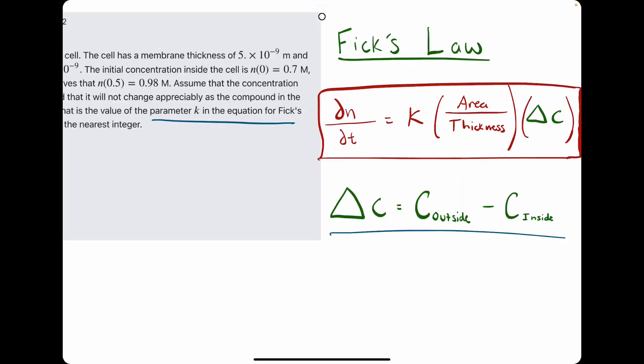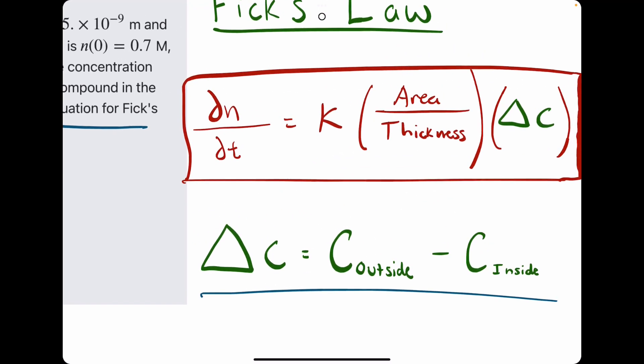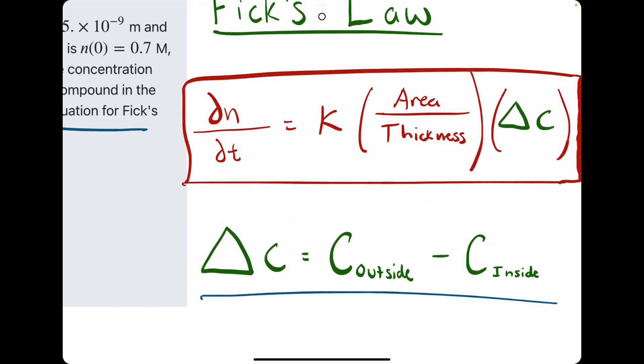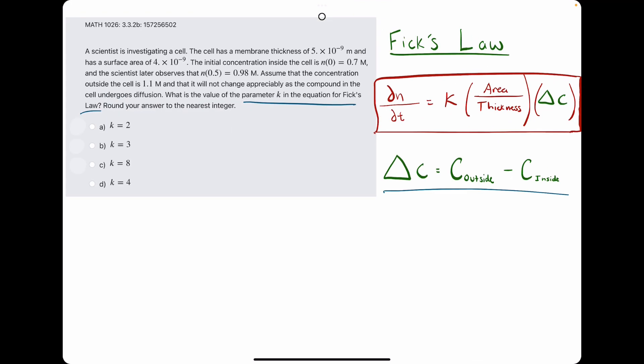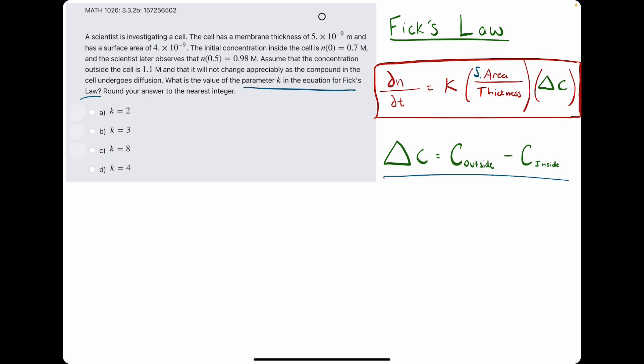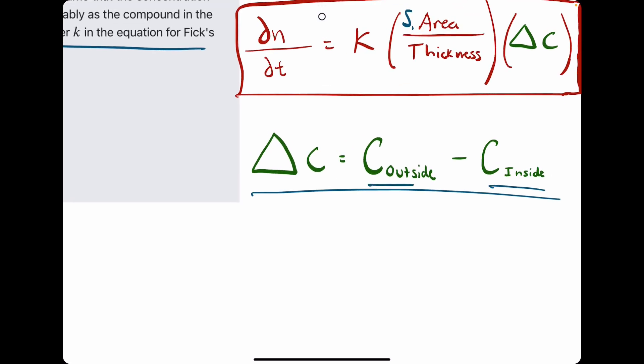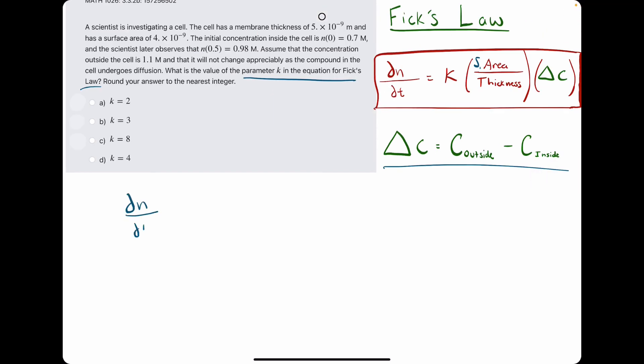Fick's Law, the one we will be using, looks like this. We have the differential equation, dn over dt equals k times the area, where I say area, I mean surface area, divided by thickness times the change in concentration. This triangle is delta, delta c, delta concentration means the change in concentration from the outside to the inside. So what we'll do first is let's set up the differential equation and see if we can solve it.